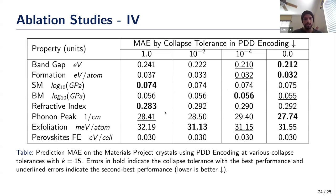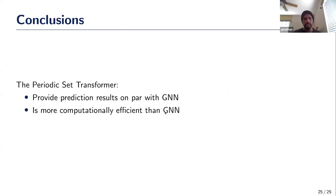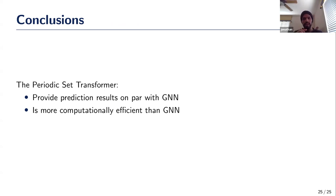In conclusion, the Periodic Set Transformer can provide prediction results on par with graph neural network models, even those using multiple line graphs, while being much more computationally efficient in both training time and prediction time. Thank you very much, Jonathan.